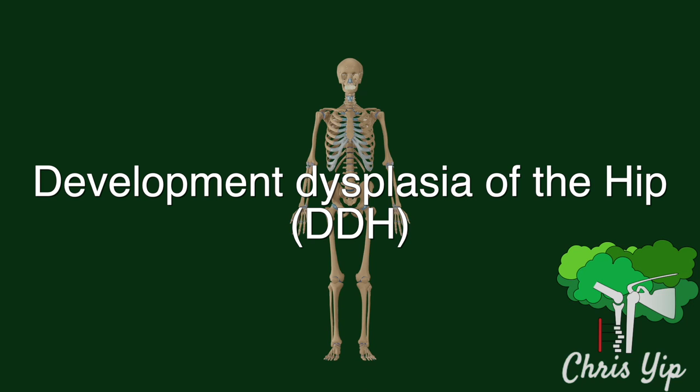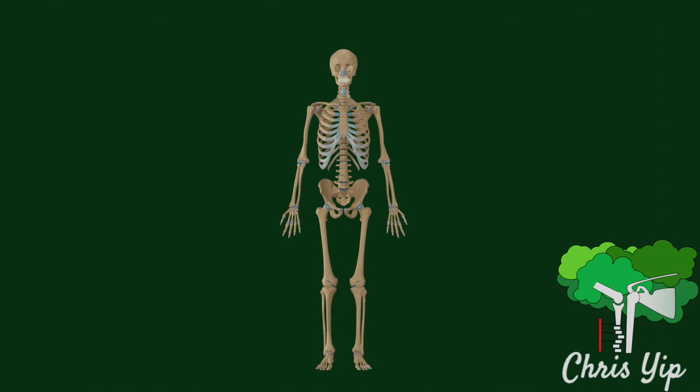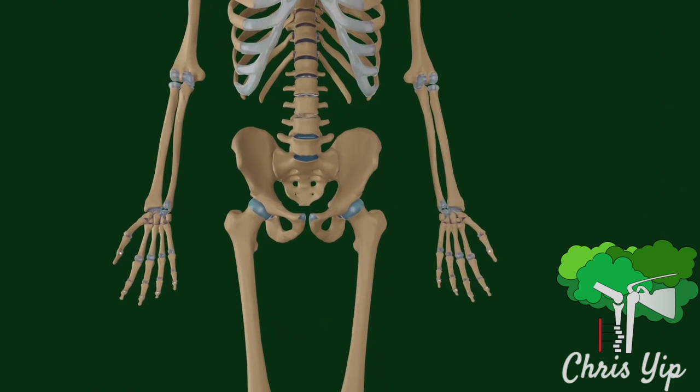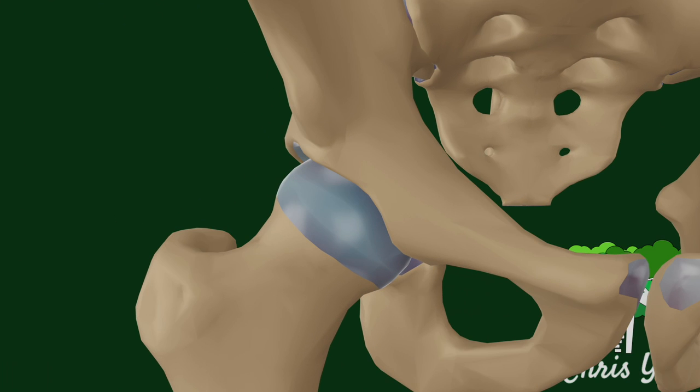Developmental dysplasia of the hip, referred to as DDH, is a gradually progressive disorder due to the malformation of anatomical structures around the hip. For the most part, the pathology exists in the acetabulum instead of the femoral head.